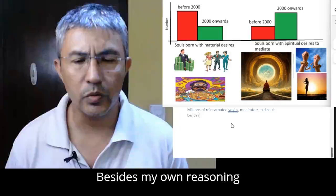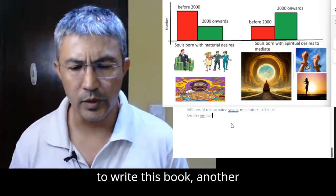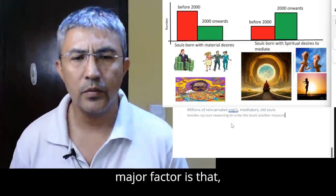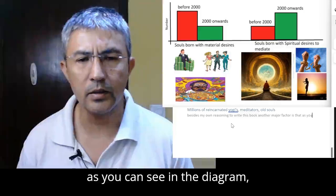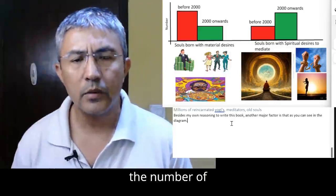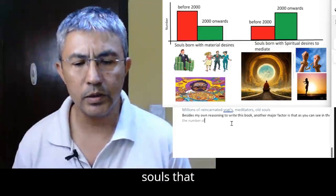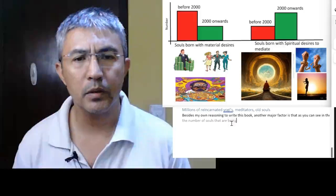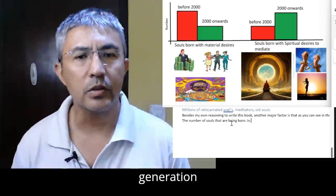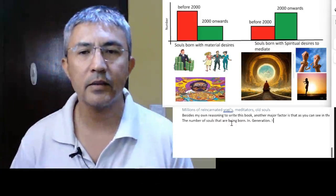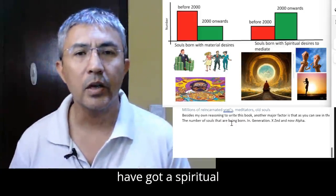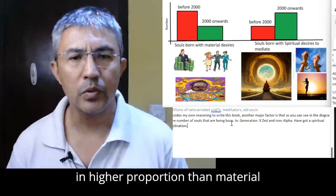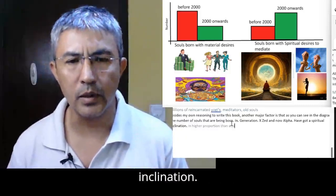Besides my own reasoning to write this book, another major factor is that, as you can see in the diagram, the number of souls that are being born in generation X, Z and now Alpha have got a spiritual inclination in higher proportion than material inclination.